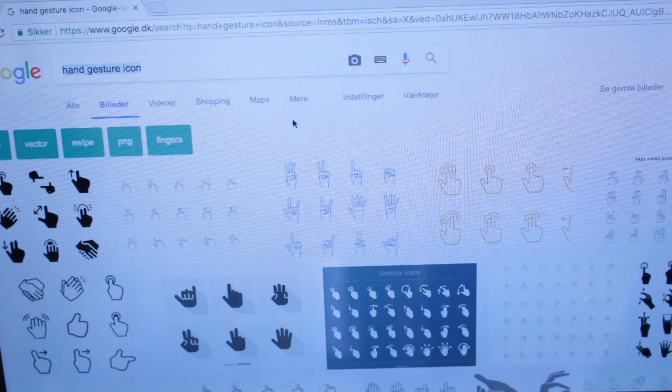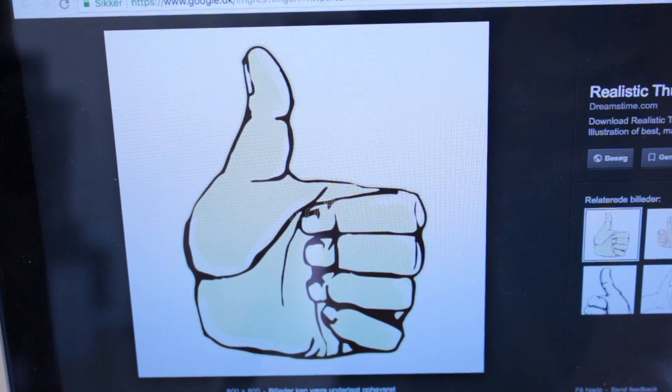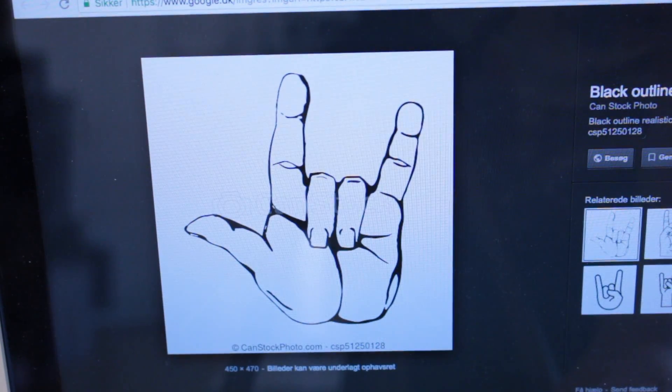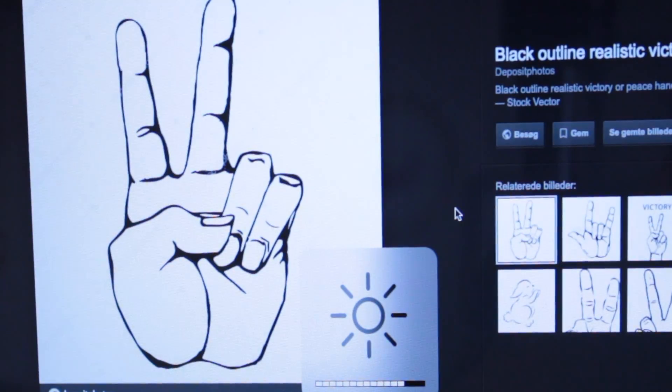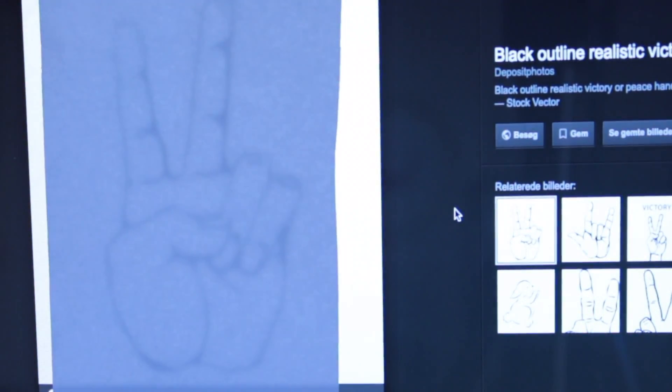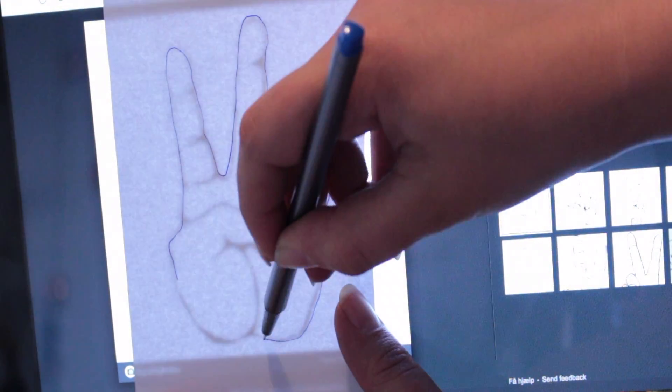Now go online and search for hand gestures. Then pick one you like and it's really up to you what kind of hand gesture you want to use. When you found one you like, turn up the light on the screen, then place a piece of paper right on top and start sketching the hand.